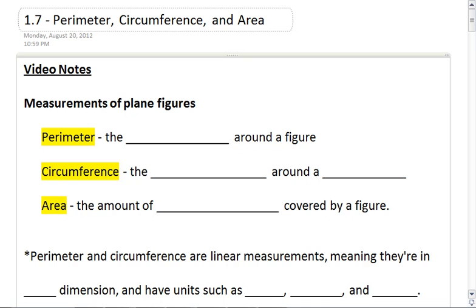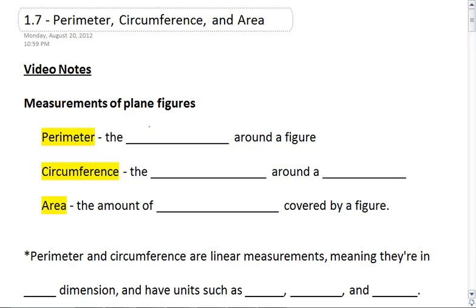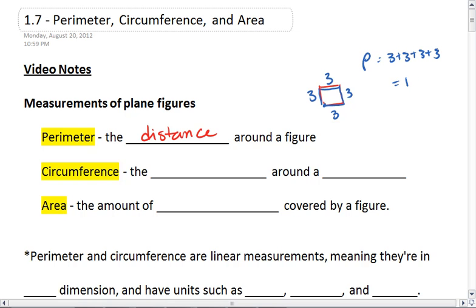The first measurement is perimeter. Perimeter is the distance around a figure. So if I had my figure and I were to lay a string along each side, and if I were then to take the string, lay it flat, and measure it, that length would be its perimeter. So if all of these sides were 3, then my perimeter is 3 plus 3 plus 3 plus 3, which would be 12.